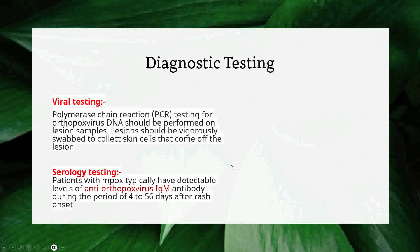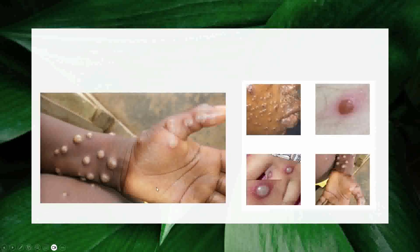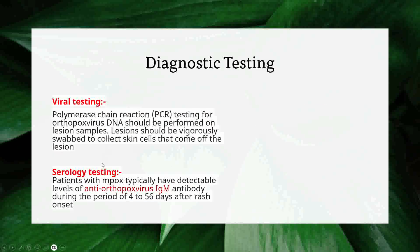How do we test for monkeypox? There are two ways of testing. Viral testing is done through PCR testing for orthopoxvirus DNA, performed on the lesion — typically by taking fluid from the lesion via a swab to check for the DNA of the orthopoxvirus. The other testing method is serology through blood, checking for antibodies via anti-orthopoxvirus immunoglobulin M, usually tested from 4 to 56 days after rash onset.